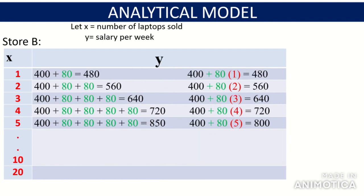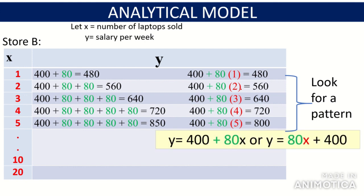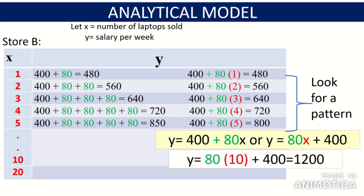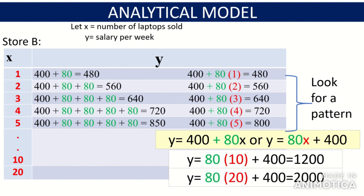For Store B, from the pattern we derive the equation Y = 400 + 80X, or Y = 80X + 400, where the slope is 80 and the y-intercept is 400. When the store sells an average of 10 laptops a day, Ina receives 1,200 pesos. If the store sells 20 laptops a day, Ina receives 2,000 pesos.